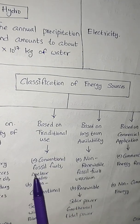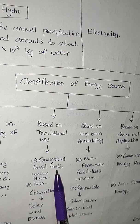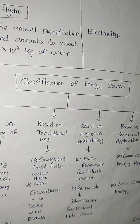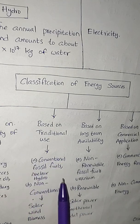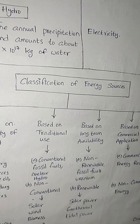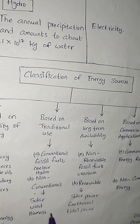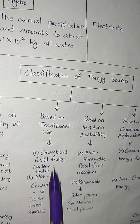Based on traditional use: conventional sources include fossil fuels, nuclear, and hydro — for example, kerosene used for household cooking. Conventional means once we consume them, they are finished. Non-conventional sources are solar, wind, and biomass — these are the non-conventional types under traditional use.